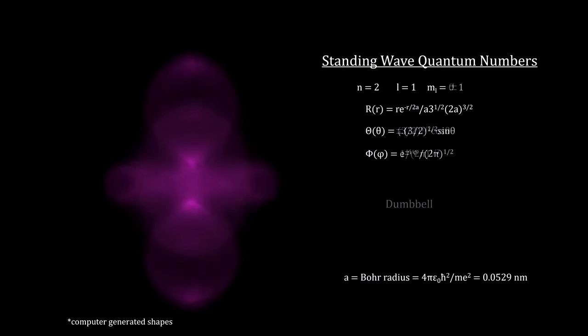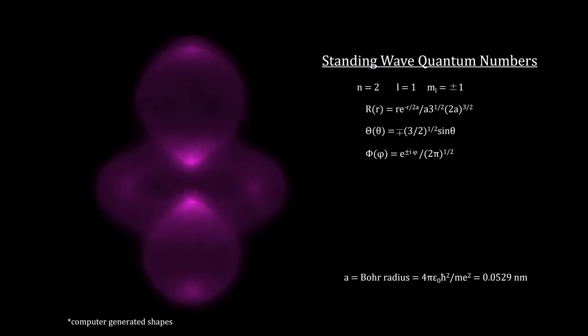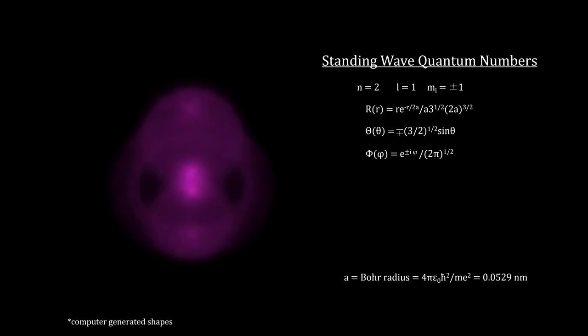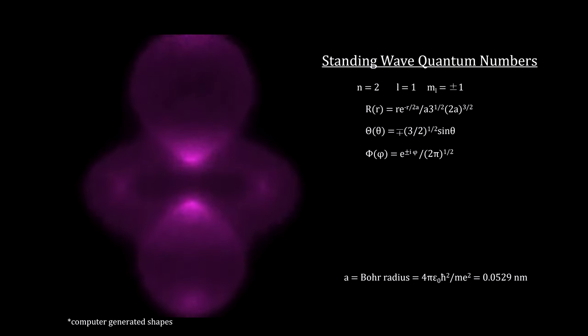In chemistry, an atomic orbital is defined as the region within an atom that encloses where the electron is likely to be 90% of the time.